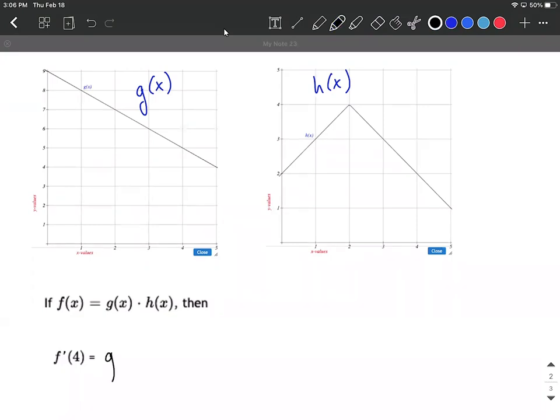The product rule says the derivative of one of these - and I'm going to go ahead and put my 4 in here as well - times the other one, again putting my 4 in without taking the derivative of h this time, plus you leave the first one alone, again putting 4 in for x, multiplied by the derivative of the other function.